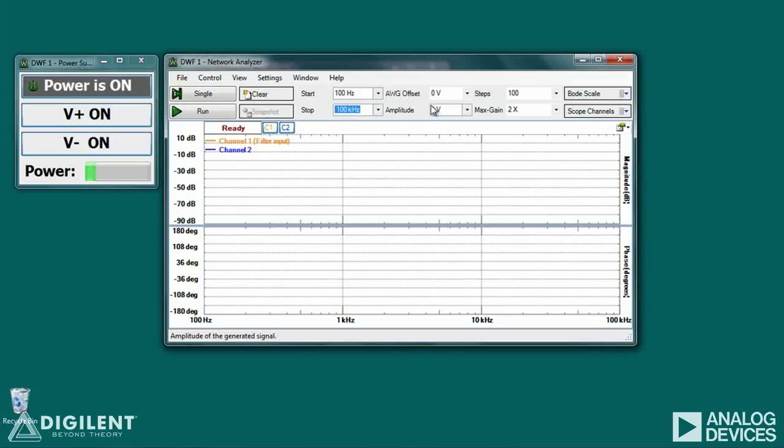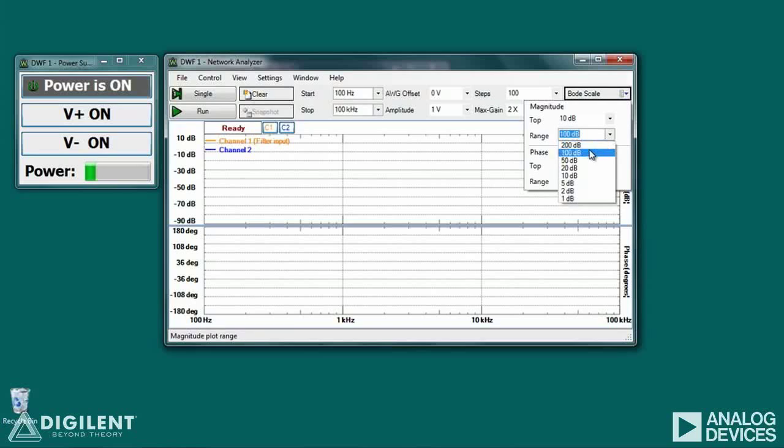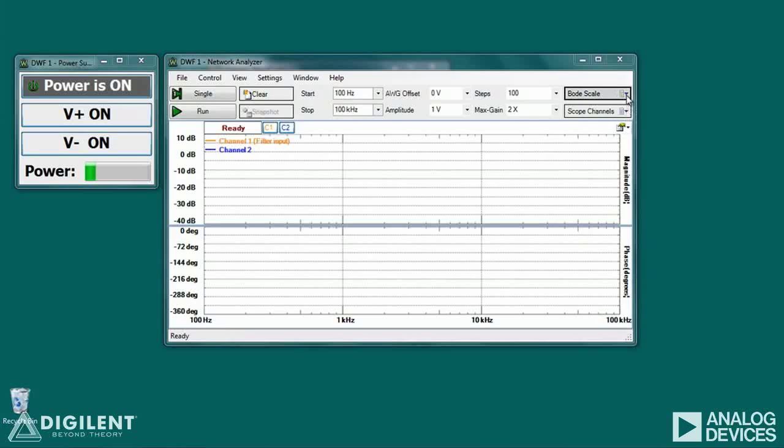I'll leave the waveform generator input to its default values of 0 offset and an input amplitude of 1 volt. I'll choose the maximum value on my magnitude plot to be 10 dB and the magnitude plot to span 50 dB, so that my plot's vertical scale will be from negative 40 dB to positive 10 dB. I'll set the vertical axis on my phase plot to have a maximum of 0 degrees and a range of 100 degrees. This should adequately represent my expected phase range from 0 to negative 90 degrees.